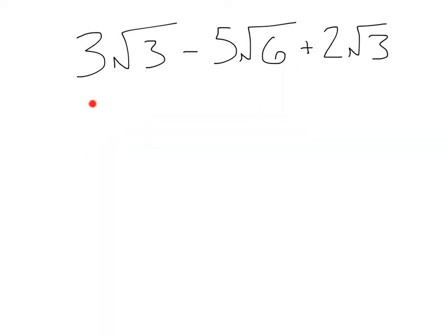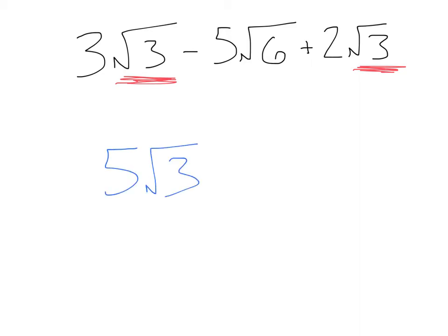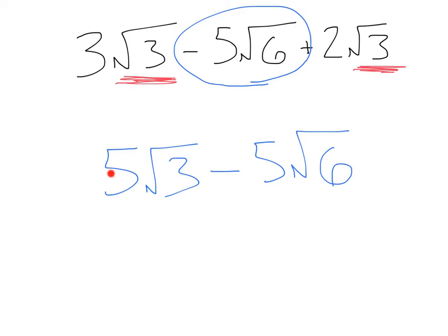What about this one: three root three minus five root six plus two root three? Let's find our like terms. I see a square root of three here and a square root of three here, so I can combine the three and the two. Three plus two gives me five square root of three. We're left with the negative five root six — because it is not a like term with root three, we cannot combine it. So we tag this negative five root six on to the end. Our simplified answer is five root three minus five root six.